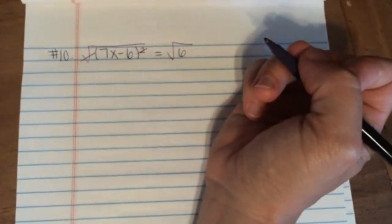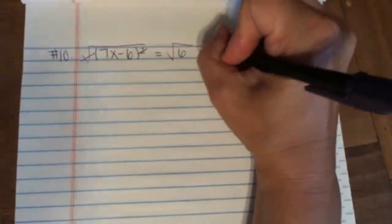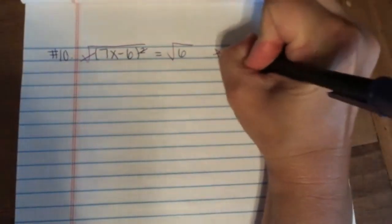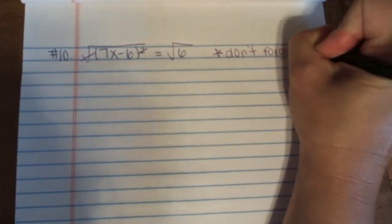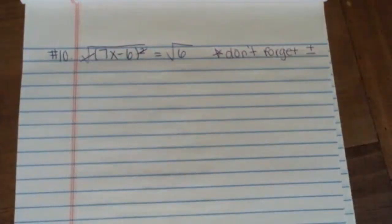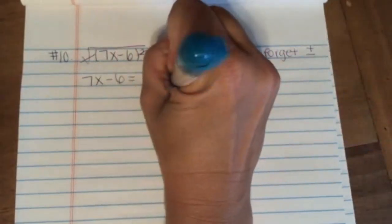That way, the square and the square root cancel each other out. Don't forget, whenever we take the square root, we have our plus or minus, so if we have 7x minus 6 equals plus or minus the square root of 6.